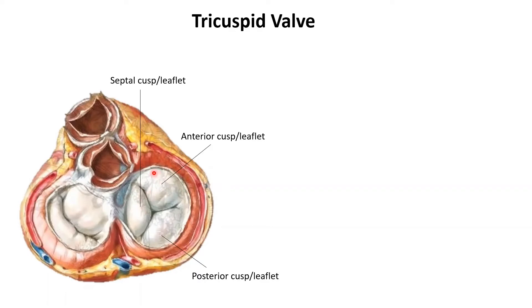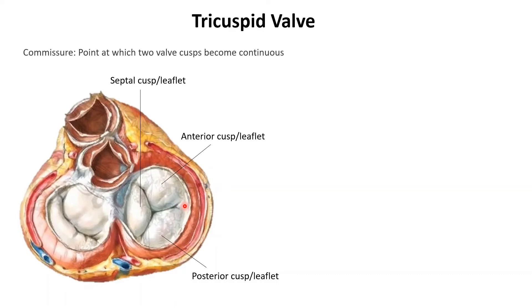Some literature calls these cusps leaflets as well because they kind of resemble a leaf. Now look right here — this is a point where the anterior and the posterior cusps are coming together. The points at which the cusps join is called a commissure.